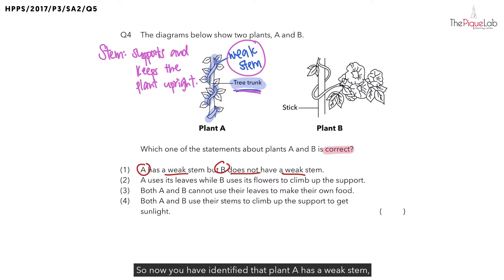So now you have identified that plant A has a weak stem, let's take a look at the diagram for plant B. If you look at plant B, you would realize that there is some similarity between plant A and plant B. What is that similarity? Plant A is growing around a tree trunk, but for plant B, it is growing around a stick. So do not confuse the stick as the plant. The plant is actually this part that I'm highlighting it right now. Since plant B is growing around a stick, what does this suggest to you about its stem? Does it have a strong stem or does it have a weak stem? Plant B has a weak stem as well. So that is the reason why it has to grow around a stick.